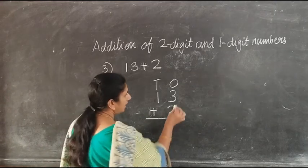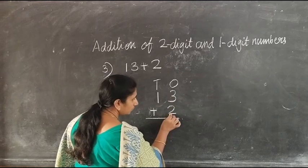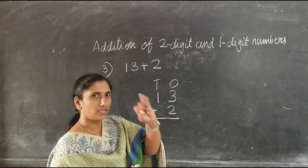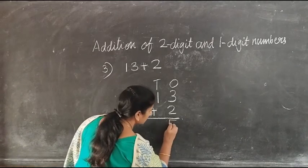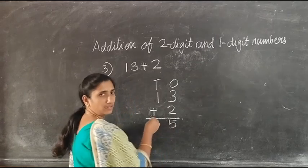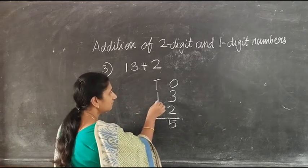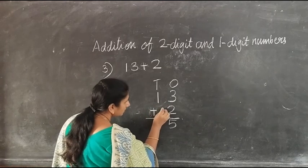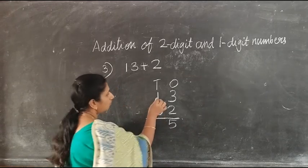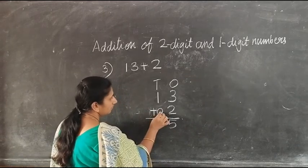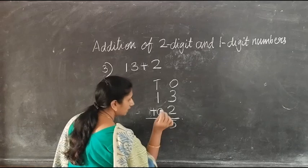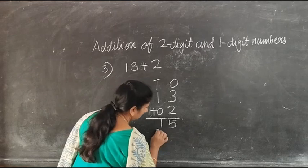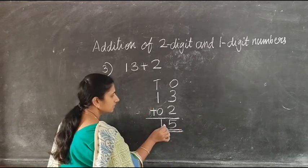Next step, add 3 and 2. So count after 3: 4, 5. Then write that 5 in the ones place. Then add the tens. Here we have 1, and below 1 there is no number, so you write 0 here. Then add 1 and 0. When we add 1 and 0 we will get 1. So write that 1 in the tens place. So we got the number as 15. So our answer is 15.